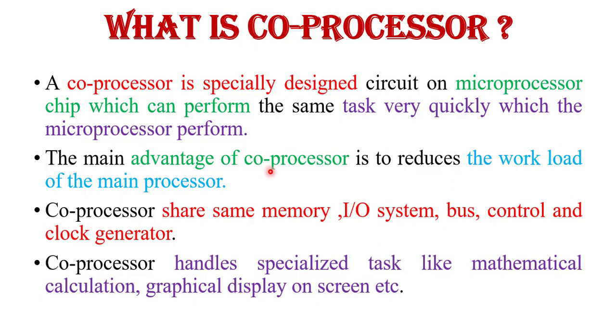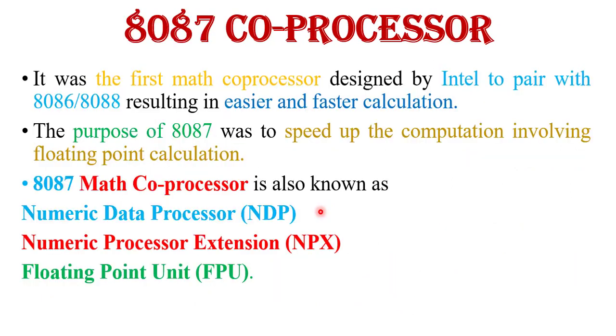The main advantage of coprocessor is to reduce the workload of the main processor. Coprocessor shares same memory, input-output system, bus, control and clock generator. Coprocessor handles specialized tasks like mathematical calculation, arithmetic calculation, geometrical calculation, graphical display on screen etc.